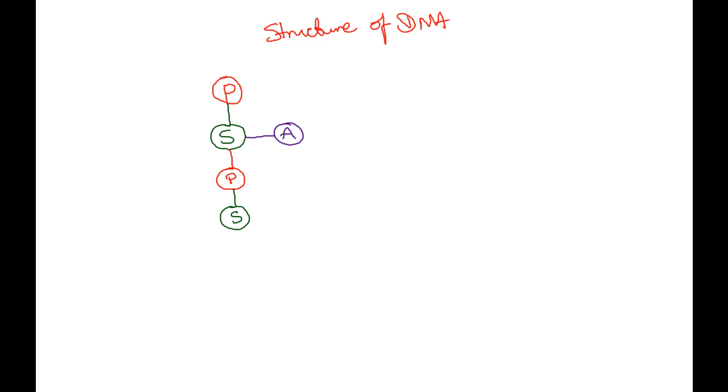What we've drawn here is the sugar phosphate backbone of one of the strands of DNA. This phosphate sugar, phosphate sugar, phosphate sugar, on the outside of one of the strands of DNA, is what we call the phosphate sugar backbone.